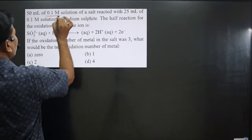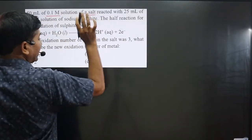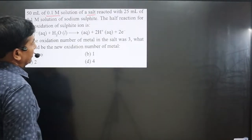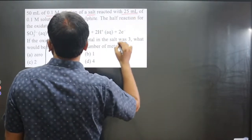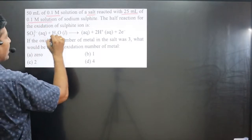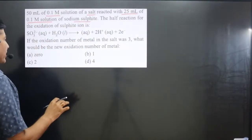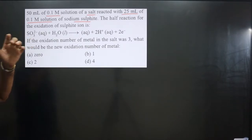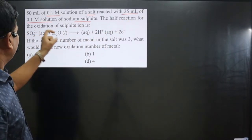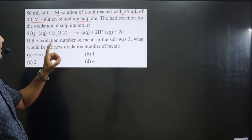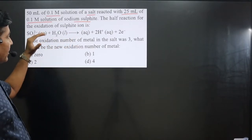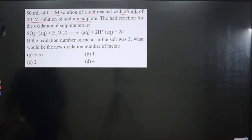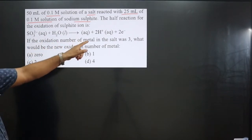The question says 50 ml of 0.1 molar solution of an unknown salt reacted with 25 ml of 0.1 molar solution of sodium sulfide. The chemical formula for the salt is not given. The half reaction for the oxidation of sulfite ion shows electrons added on the right side, confirming this is an oxidation half-reaction.